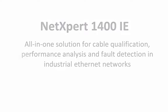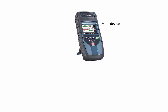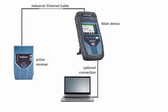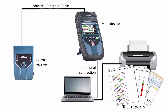It tests and documents the capability of cabling links to support Gigabit Ethernet operations, done in compliance with the IEEE 802.3 standard. Irrespective of the category of cables and connectors installed, a pass-fail result indicates whether the existing cabling can support data rates up to 1 Gigabit per second.